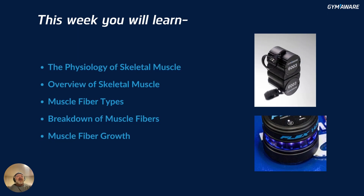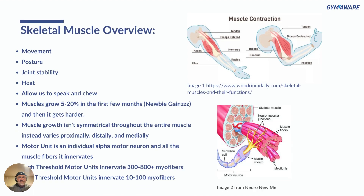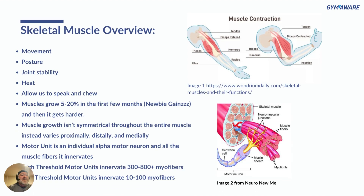This week you're going to learn about the physiology of skeletal muscle. We'll do an overview of skeletal muscle, cover muscle fiber types, a breakdown of muscle fibers, and then muscle fiber growth. For the overview: skeletal muscle is used for movement — that's the primary function, and that's what most of us think about. It's what helps us lift weights, run down the track, and jump.